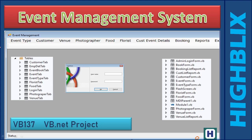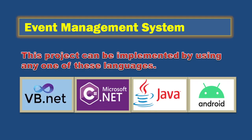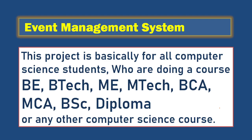In this video we will explain the project Event Management System. This is a VB.NET project, basically for an event management company — a company which conducts events like marriages, birthday parties, and corporate meetings. This project can be implemented using any language: VB.NET, C#.NET, Java, or even as an Android or web application. What we show here is a desktop application created in VB.NET.